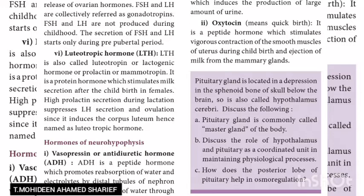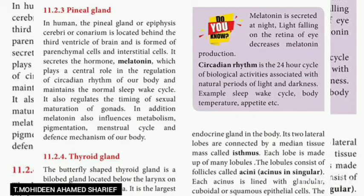Vasopressin, or antidiuretic hormone (ADH), is a peptide hormone which promotes reabsorption of water and electrolytes by the distal tubules of the nephron, thereby reducing the loss of water through urine — hence it is called the anti-diuretic hormone. It also causes constriction of blood vessels when released in large amounts, increasing blood pressure. ADH deficiency causes diabetes insipidus, which includes the production of large amounts of urine. Oxytocin is a peptide hormone which stimulates vigorous contraction of the smooth muscles of the uterus during childbirth and ejection of milk from the mammary glands.